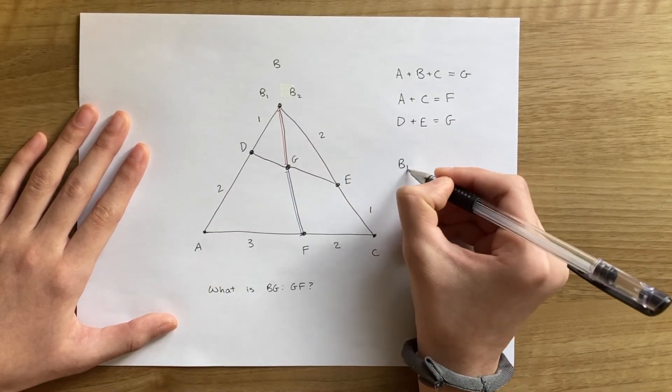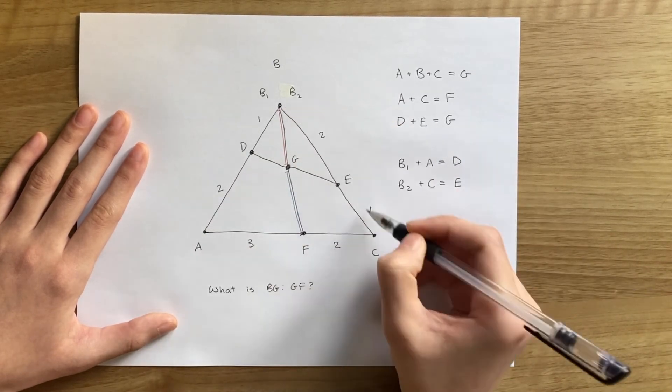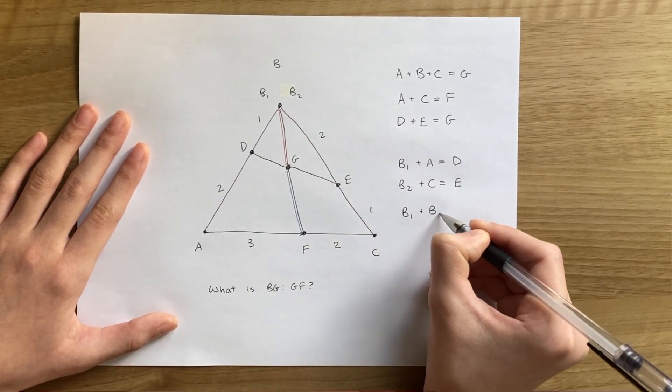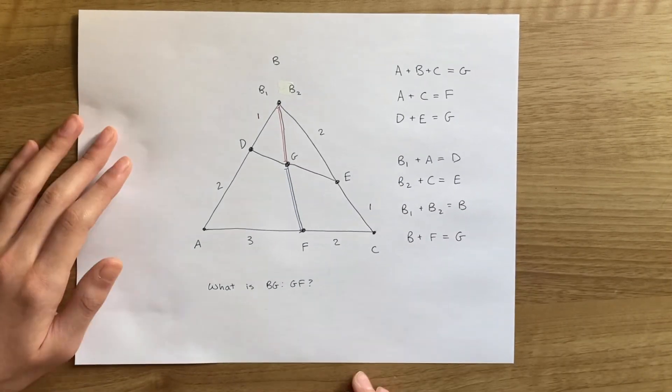The center of B1 and A is D. The center of B2 and C is E. The center of B1 and B2 is B. And finally, the center of B and F is G.